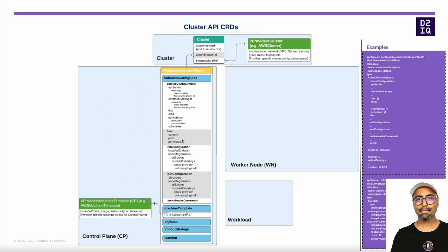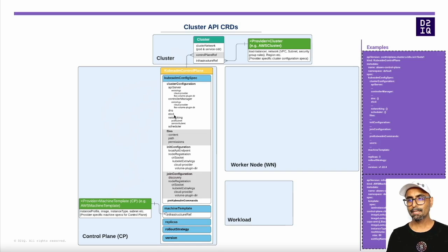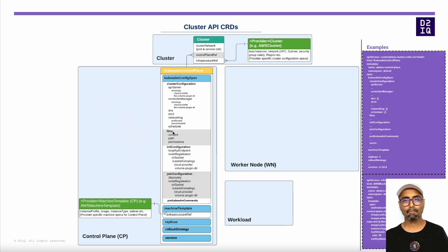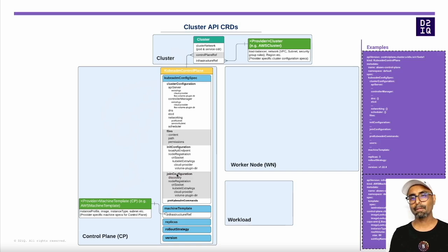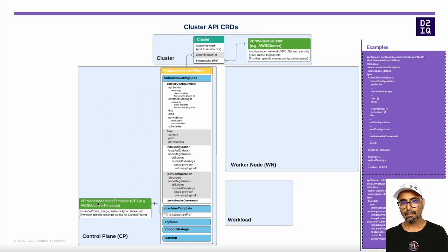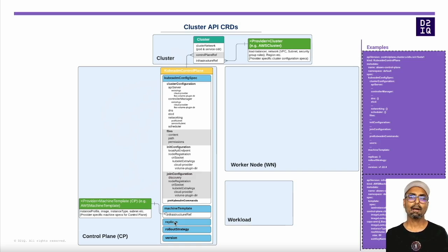The kubeadm config section includes cluster configuration for core components like API server, controller manager, etcd, and scheduler. It also has a subsection that allows you to create files on the target nodes and run commands before kubeadm init and join are run. It contains the init configuration and join configuration that are used in conjunction with the cluster configuration to form the kubeadm config resource, which works as the input for kubeadm init and join respectively. The provider machine template contains the template used to create provider machine resources, and the replicas spec defines how many are to be created.